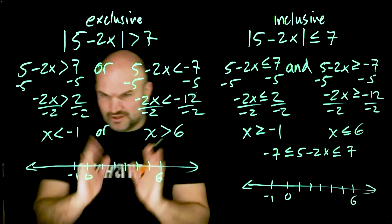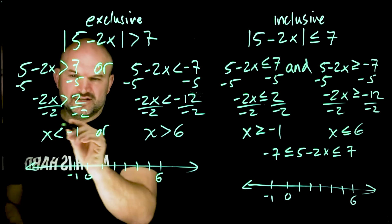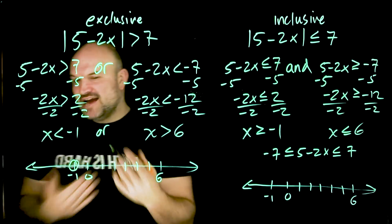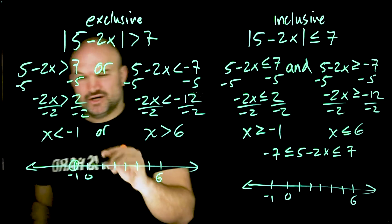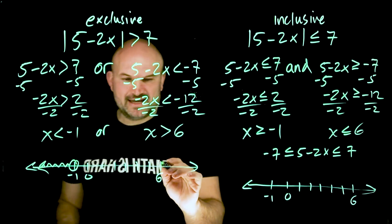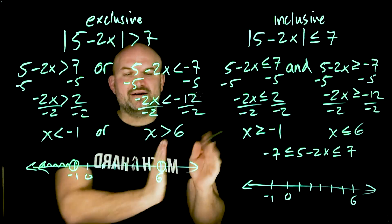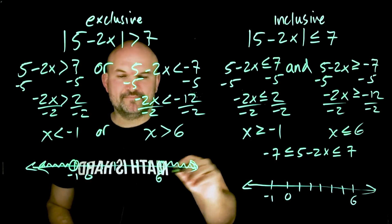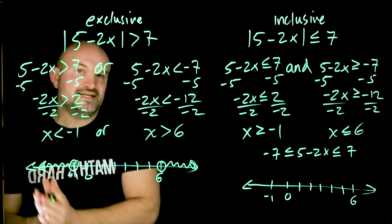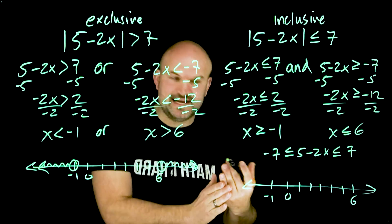Let's look at the 'or' solution on a number line. We have X less than negative one — that's not included, so we use an open circle — with all values going to the left. And X greater than six — also not included, open circle — with all values going to the right. To satisfy this inequality, you need a value of X that is either less than negative one or greater than six.